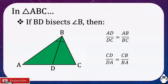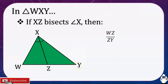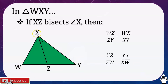Let's have another one. In triangle WXY, if XZ bisects angle X, then it divides WY into two segments: WZ and ZY. These segments are proportional to the other two sides of the triangle, WX and XY. So WZ over ZY is equal to WX over XY. Or alternatively, YZ over ZW is equal to YX over XW. Those are the proportions we can use.